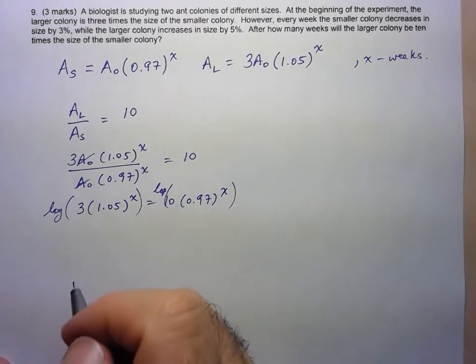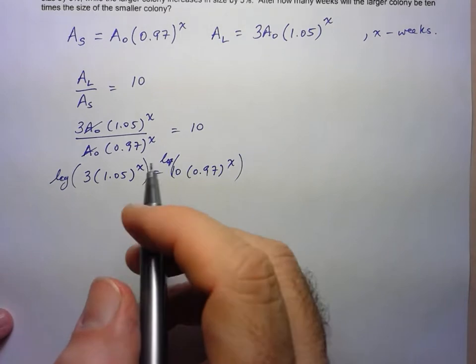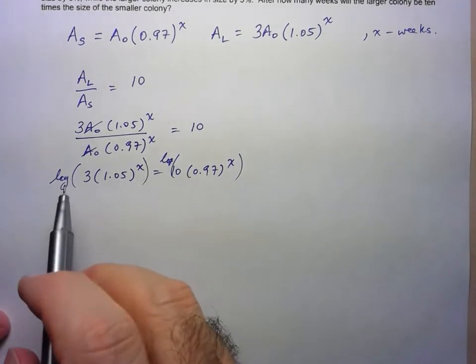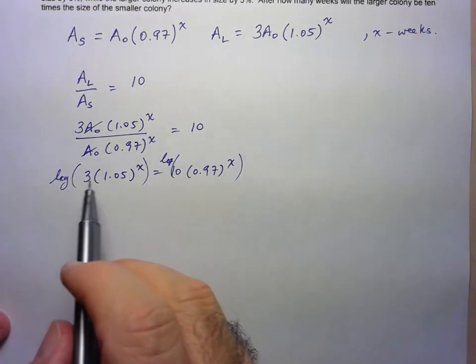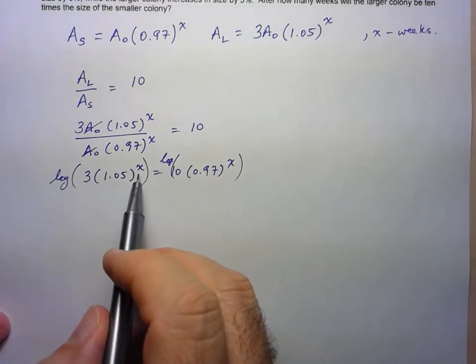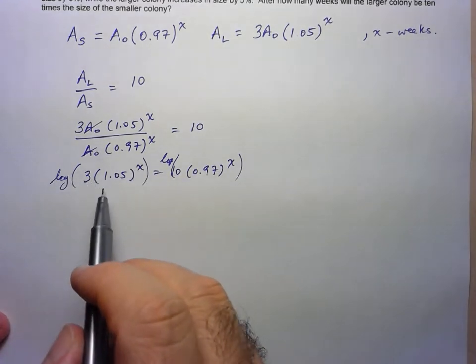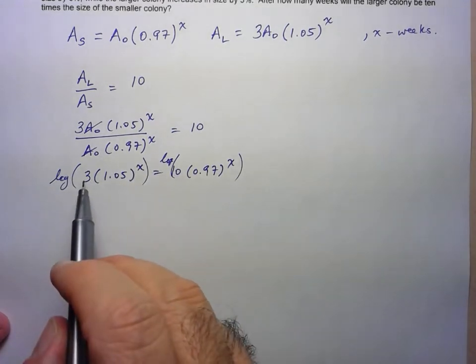And we should be able to solve this. So because we've done a few of these now, I'll skip a few steps. So the first thing, I know I won't be able to use the ski slope rule yet, because I don't just have a power inside of the logarithm. I've also got this multiple of 3.